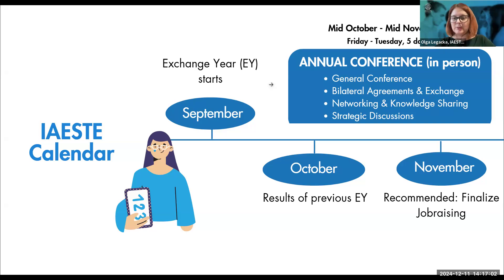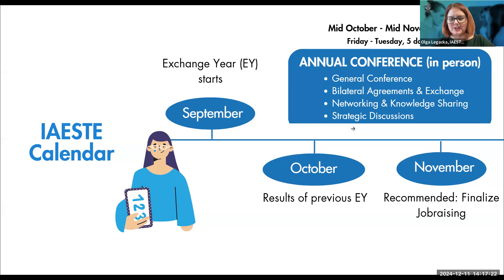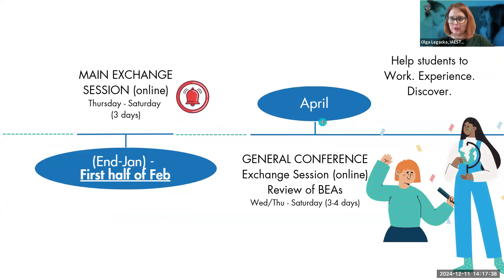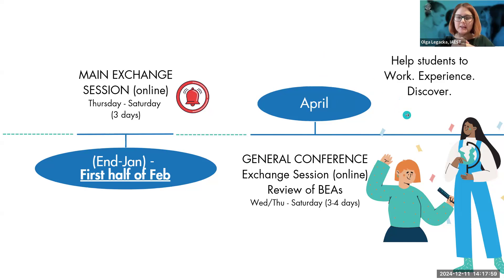November is also the last moment to finalize job raising, because based on the bilateral agreements you know what you've promised to other committees. From November until end of January or first half of February, committees have time to raise the jobs they promised during the bilateral agreement session. We have always done exchanges in January — this is still happening in January, but this time it will be online only.